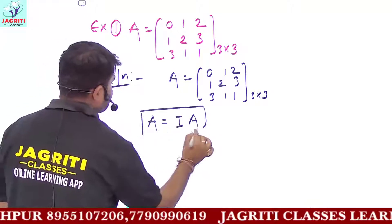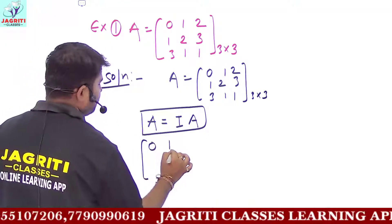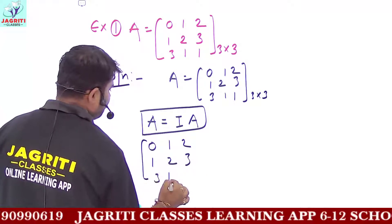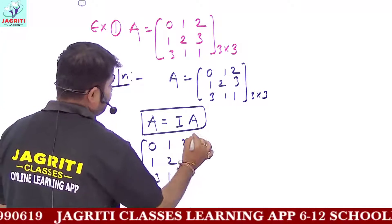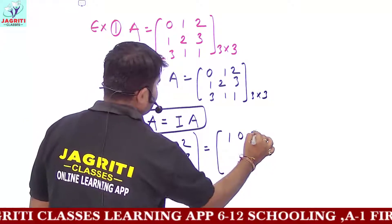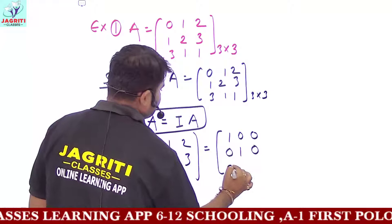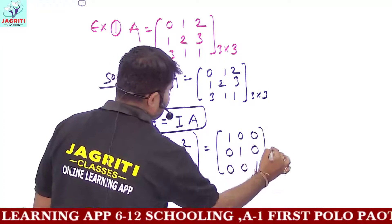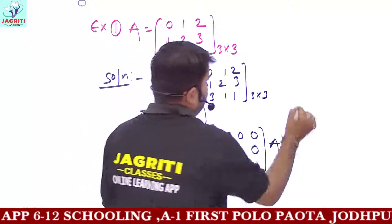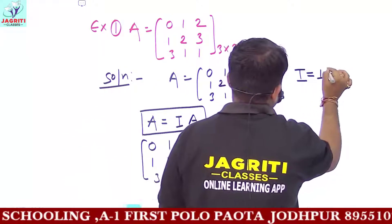This identity we have to use here. We put in the values: [0, 1, 2; 1, 2, 3; 3, 1, 1] equals to I, where I is [1, 0, 0; 0, 1, 0; 0, 0, 1] — the 3 by 3 identity matrix.